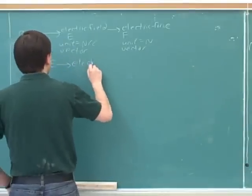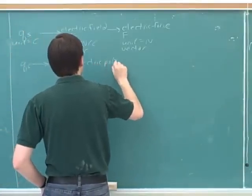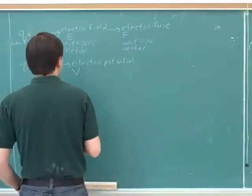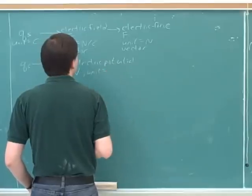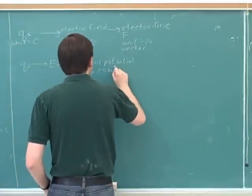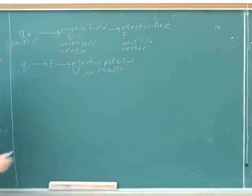What's the symbol for electric potential? V. Good. And what are the units for that? Volts. Good. But what are the subunits for a volt?